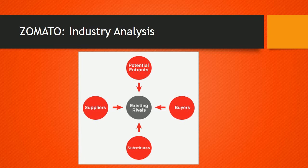Fourth, the bargaining power of buyers is also low — if buyers want the best possible service they have to use Zomato. Fifth, the rivalry amongst existing competitors — once it was challenging for Zomato, but now the scenario has changed. Some of them have even exited the industry, so it's also low.